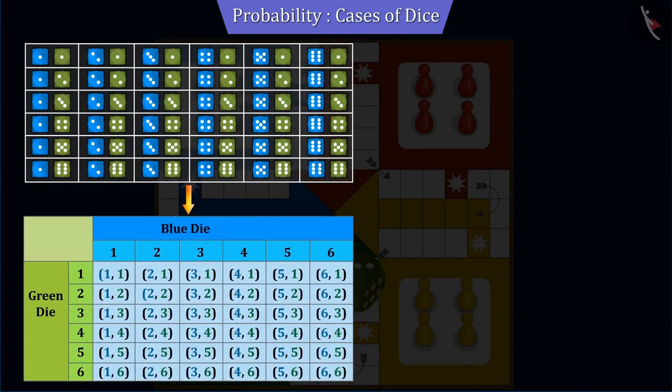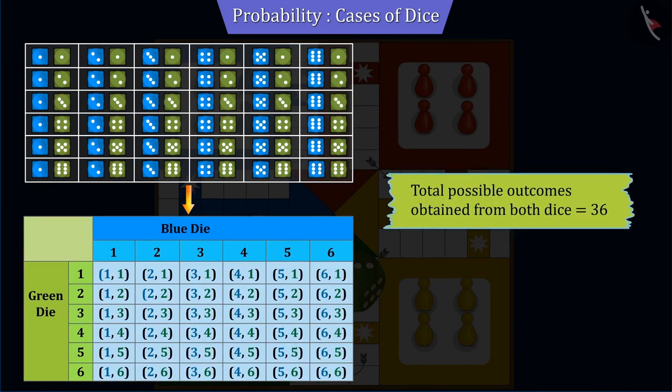Here we observe rolling two dice together gives a total of 36 different outcomes, which are indicated in this table.